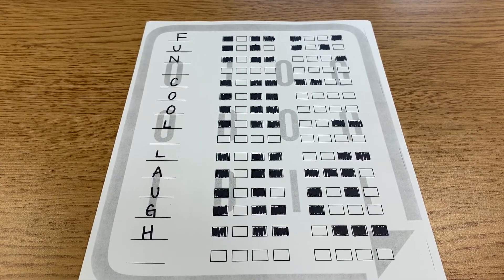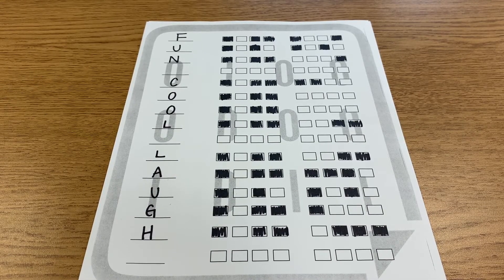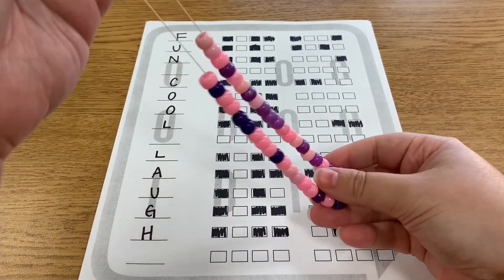If you want to spell a longer word, like laugh, then instead of a bracelet, you can do a necklace.